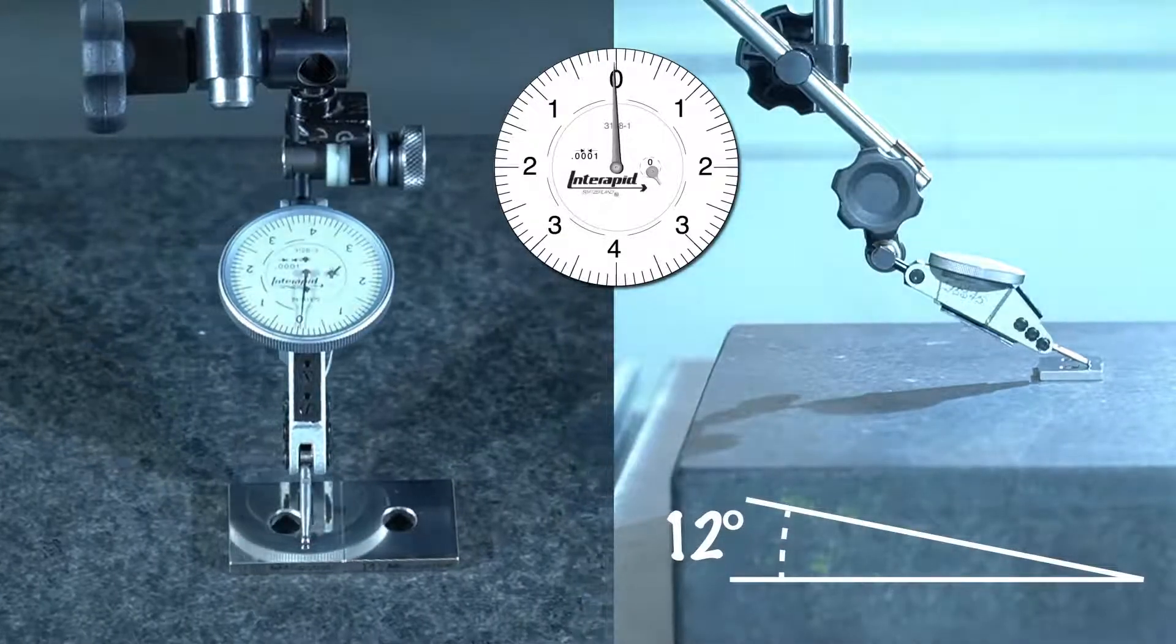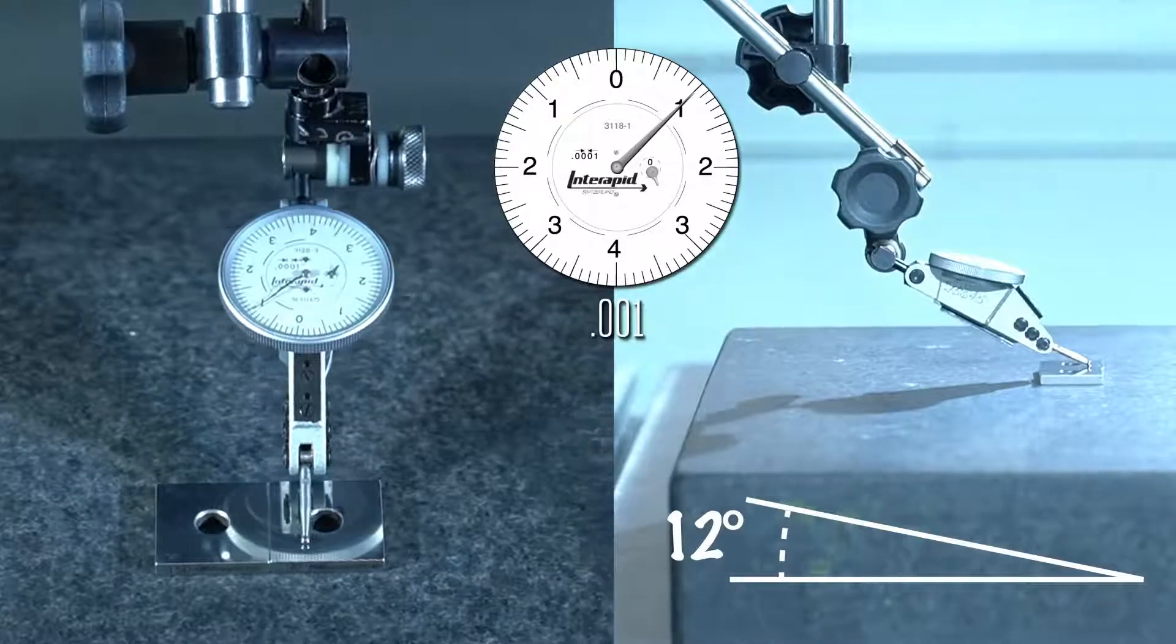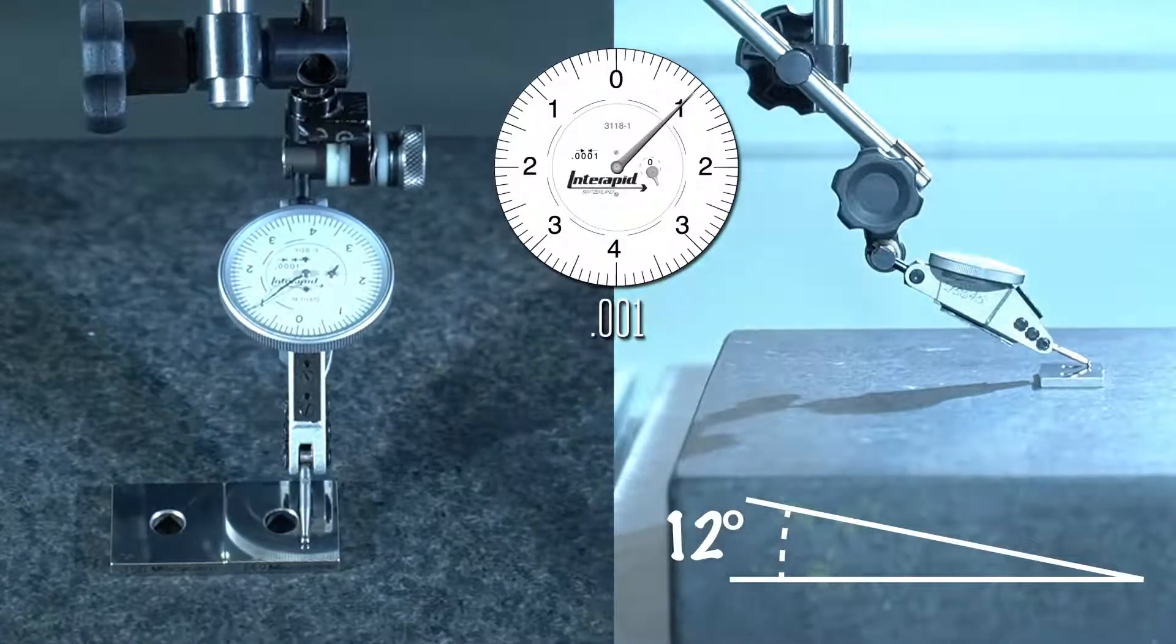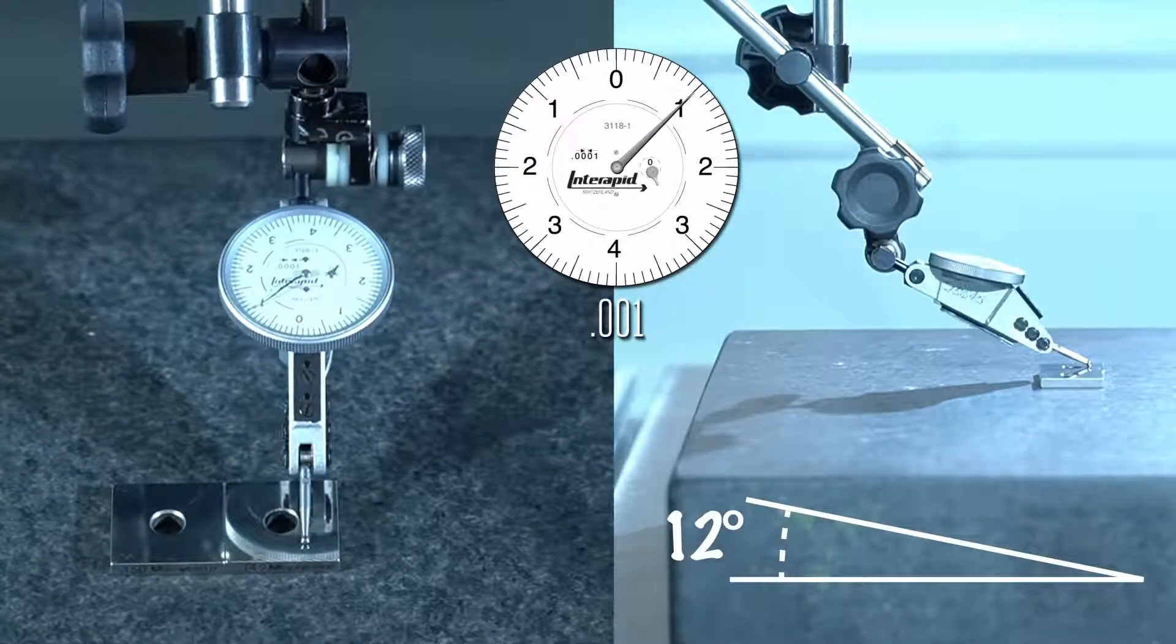Now we'll move the indicator to this 0.149 inch gauge block. As you can see, the dial moved by one mark or a thou. As we know the height of the two blocks, we know that this is an accurate measurement.